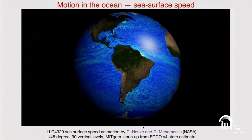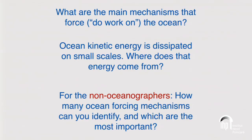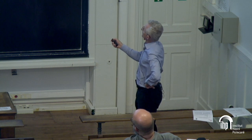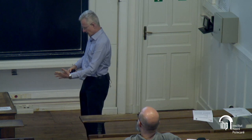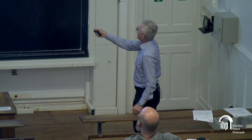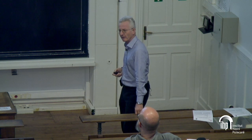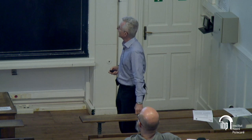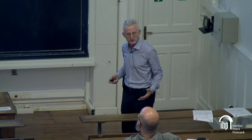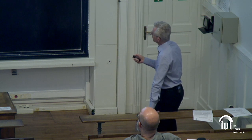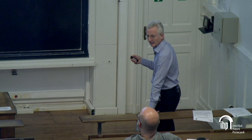Here's a question for the non-oceanographers: what are the main mechanisms that force motion — that do work on the ocean? Kinetic energy is going to be dissipated by viscosity and a cascade to small scales, so there has to be a supply of kinetic energy. How many ocean forcing mechanisms can you identify, and quantitatively, which are numerically the largest?